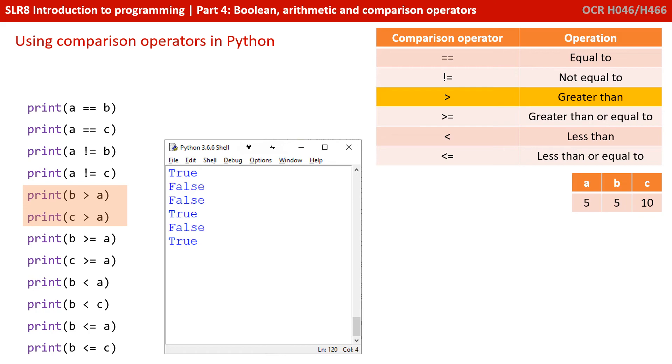Just as with maths, we have b is greater than a—that's false. Whereas c is greater than a is true. b is greater than or equal to a is now true because they are equal. And c is still greater than or equal to a, so that's true. b is less than a is false, they're the same. b is less than c is true. Whereas b is less than or equal to a is definitely true because they're both 5, so they are equal. And still b is less than or equal to c is true.